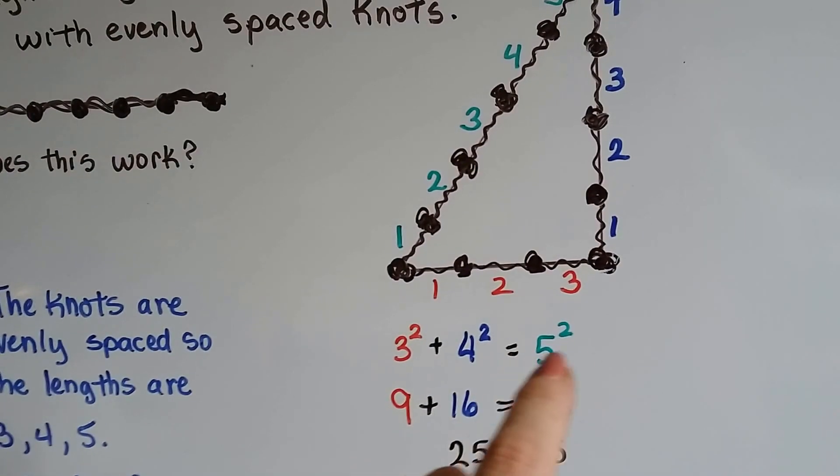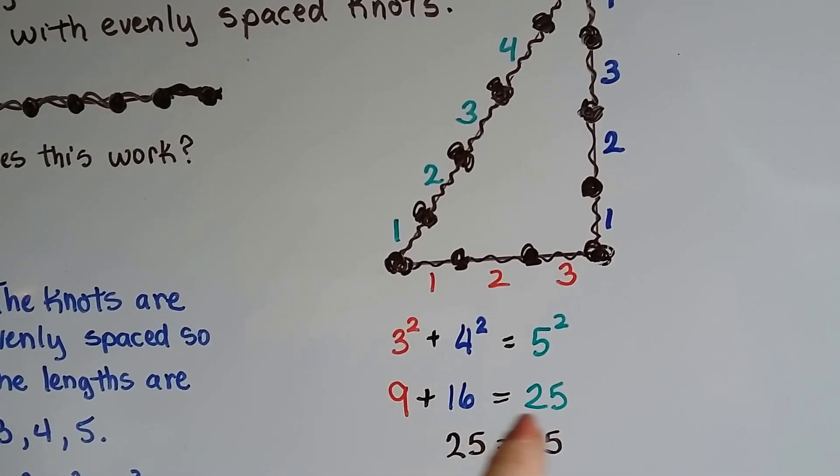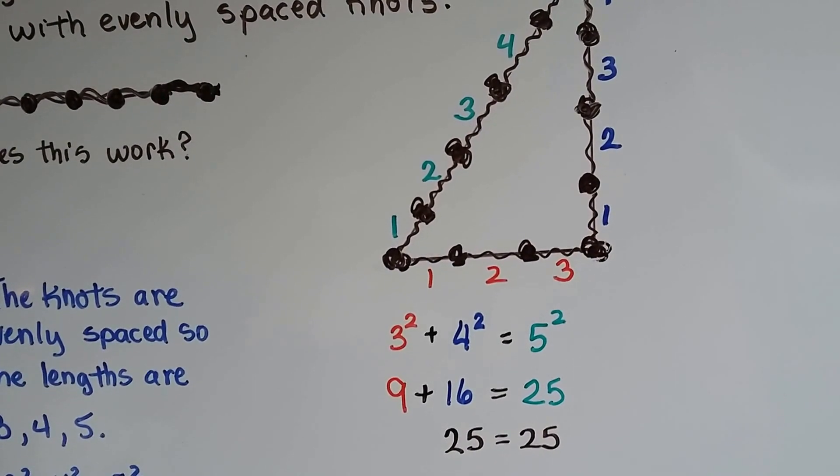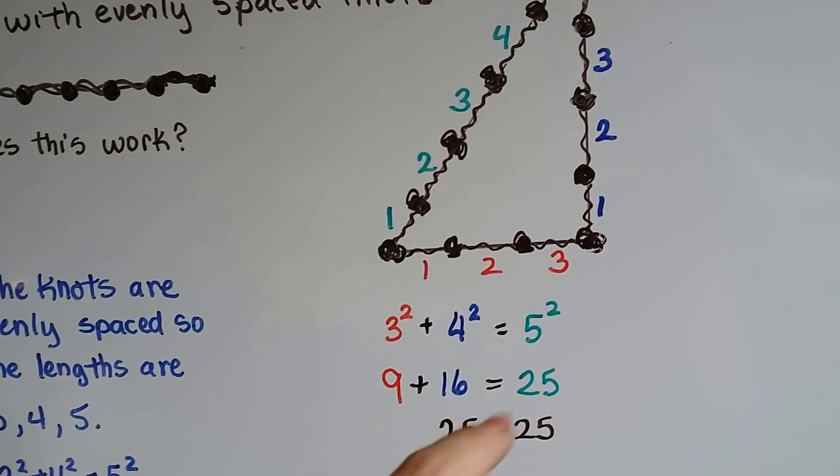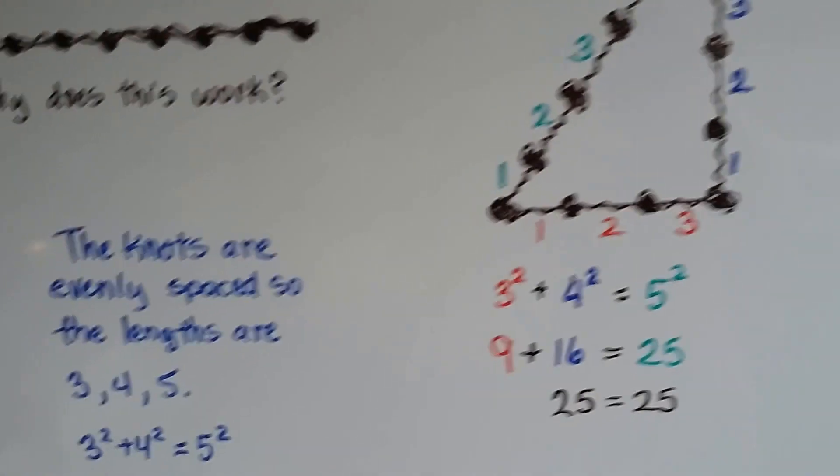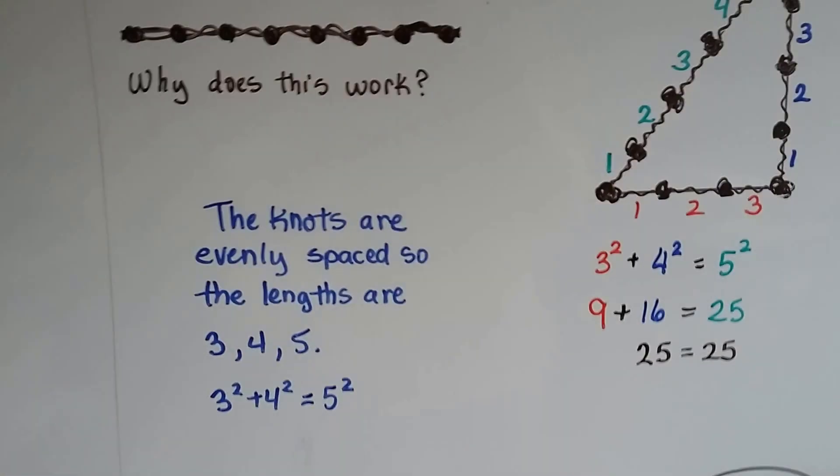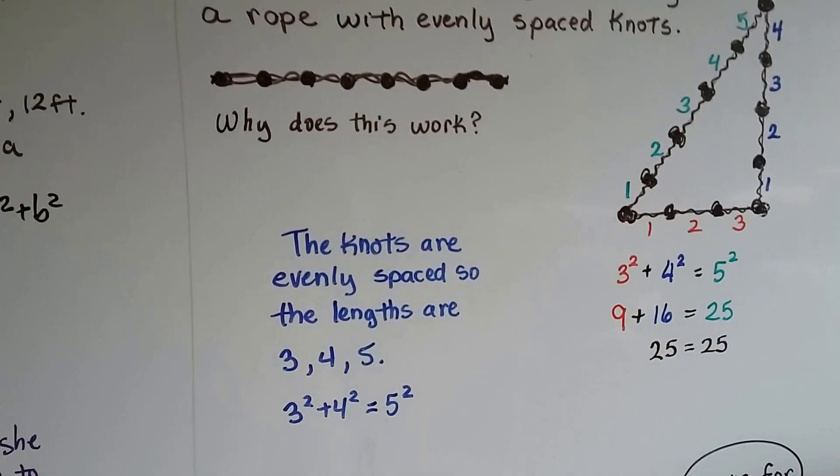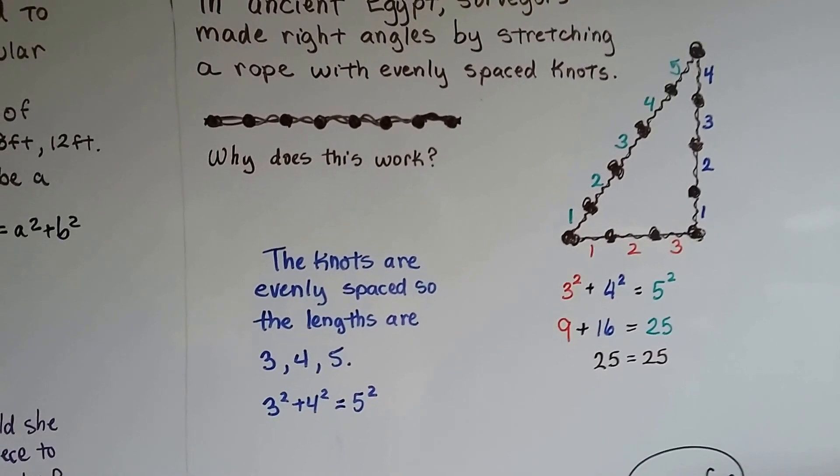That's 3 squared plus 4 squared equals 5 squared. That's 9 plus 16 equals 25. 3 times 3 is 9, 4 times 4 is 16, 5 times 5 is 25, and 25 equals 25. The knots are evenly spaced so the lengths are 3, 4, 5, and it works.